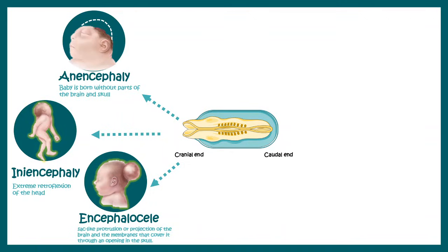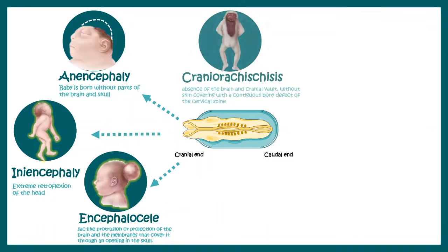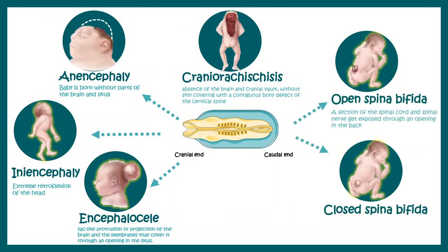When the caudal end closure doesn't happen, there is an extreme form of neural tube closure defect where the entire brain and spinal column is essentially missing. If the caudal end doesn't fuse properly, there can be spina bifida — either open or closed spina bifida — where a section of the spinal cord and spinal nerves get exposed through an opening in the back and bulge outside.